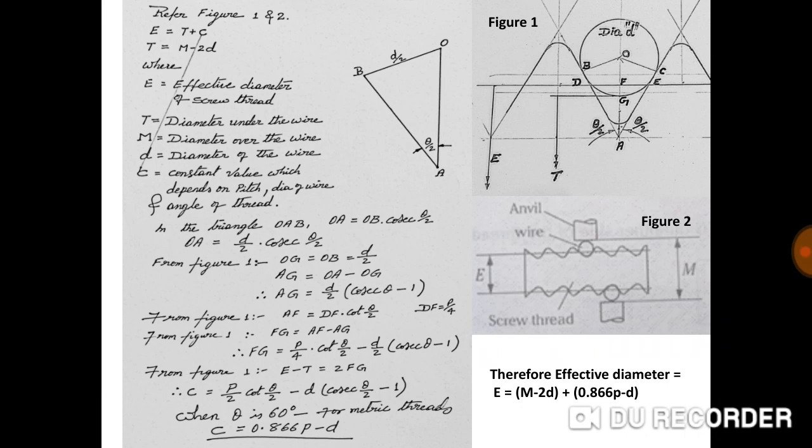In triangle OAB as shown in the diagram, OA equals OB × cosec(theta/2), where OB equals D/2 and D is the diameter of wire used for measurement. Therefore OA equals (D/2) × cosec(theta/2). From figure 1, AG equals OA minus OG, where OG equals D/2 × cos(theta/2). So AG equals (D/2) × (cosec(theta/2) − 1). Again from figure 1, AF equals DF × cot(theta/2), where DF equals P/4. It is clear from figure 1 that FG equals AF minus AG, giving FG equals (P/4) × cot(theta/2) minus (D/2) × (cosec(theta/2) − 1).